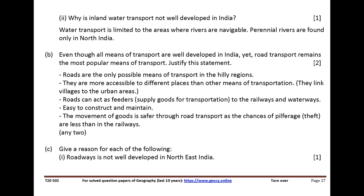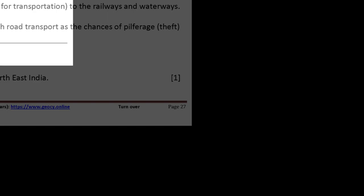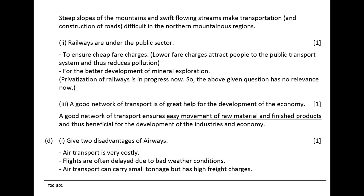Give a reason for each of the following. Roadways are not well developed in northeast India: steep slopes of the mountains and swift-flowing streams make transportation difficult in the northern mountainous regions. Railways are under the public sector: to ensure cheap fare charges and for the better development of mineral exploration. A good network of transport ensures easy movement of raw materials and finished products, and is thus beneficial for the development of industries and the economy.